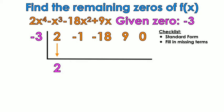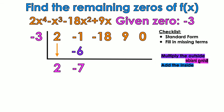So I'm going to bring down 2. Multiply the outsides. 2 times negative 3. Bring it inside. Negative 6. Add the insides. Negative 1 plus negative 6 equals negative 7. We repeat the process over again. Multiply the outsides. Negative 3 times negative 7. Bring it inside. Negative 21. Add the insides. I'm going to get 3. Negative 18 plus 21 equals 3.